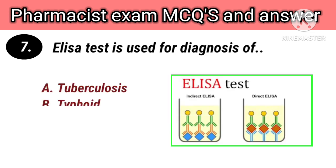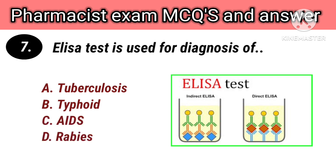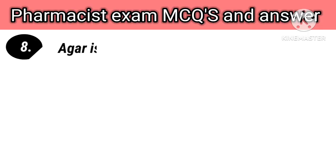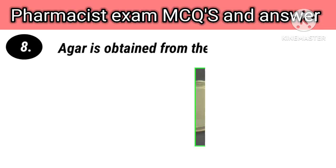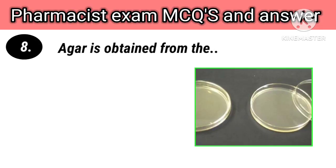ELISA test is used for diagnosis of options: A. Tuberculosis, B. Typhoid, C. AIDS, D. Rabies. Right answer is C. AIDS.